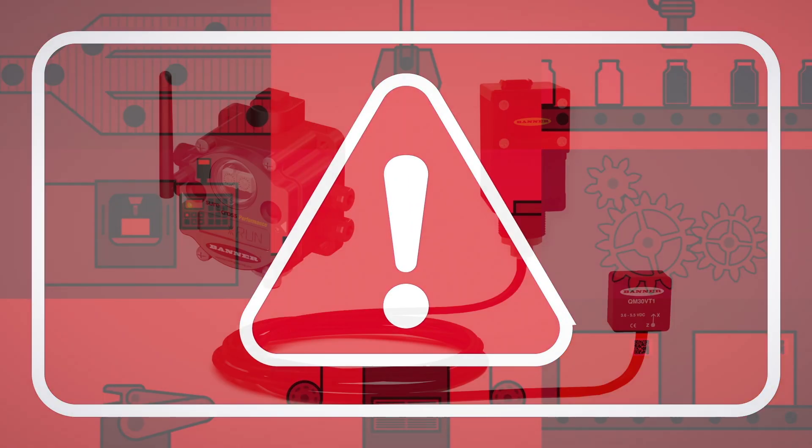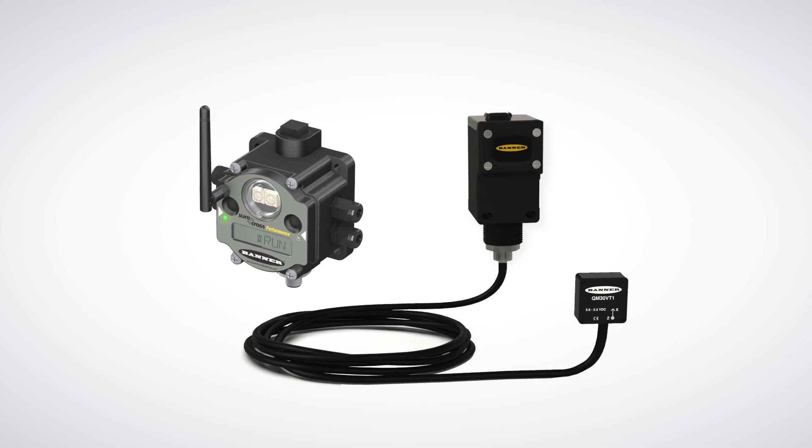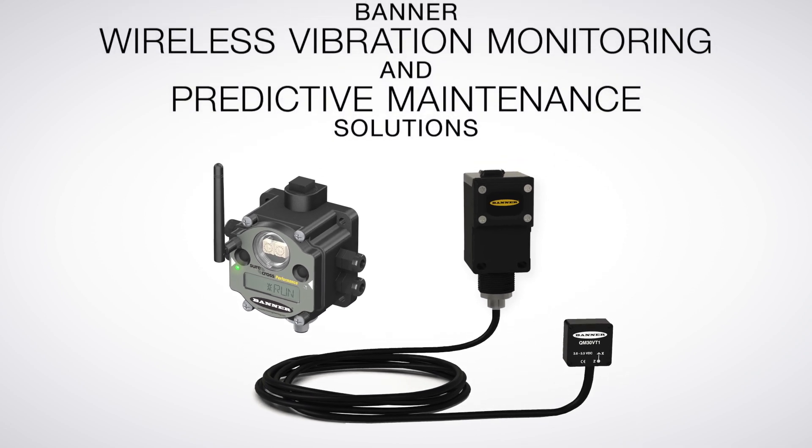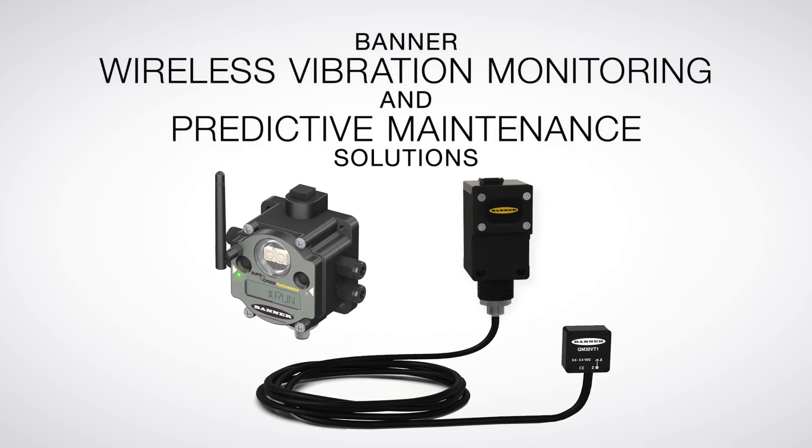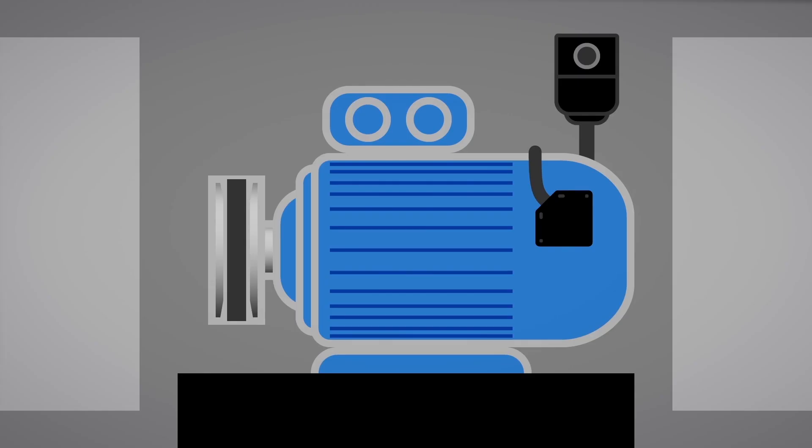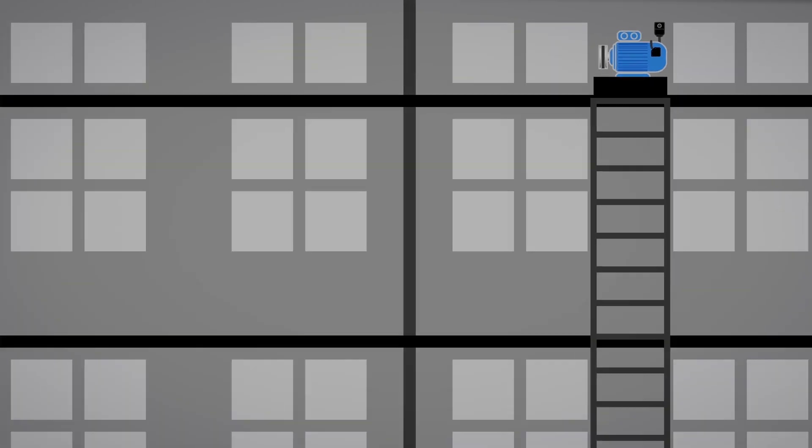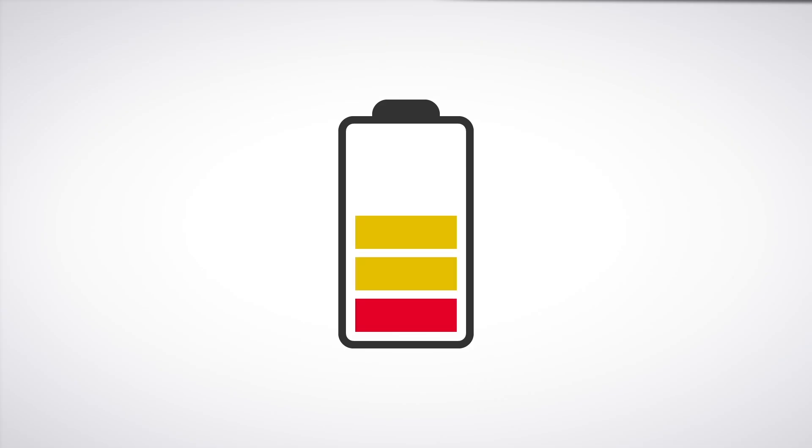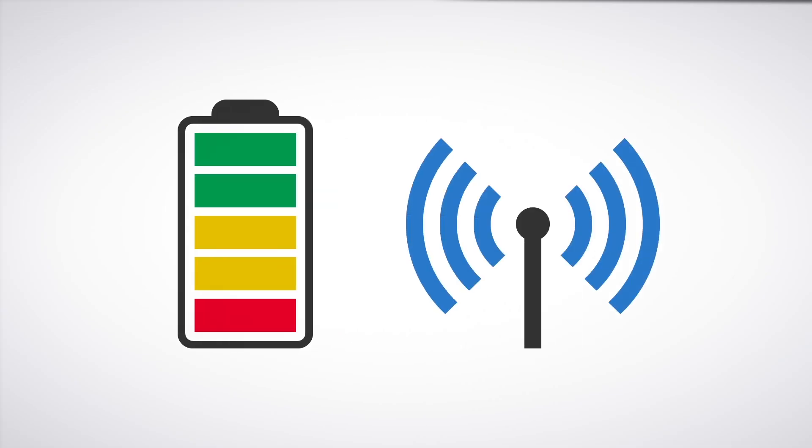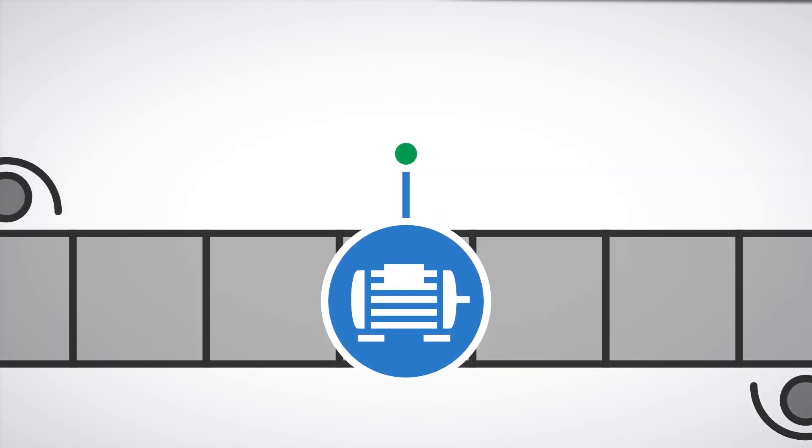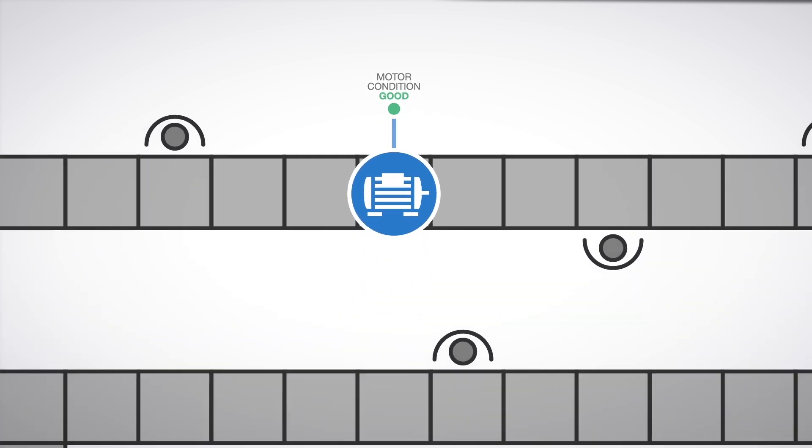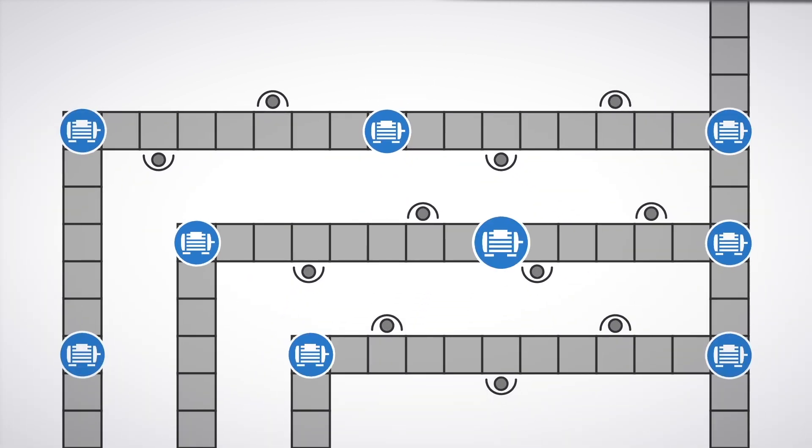Stay a step ahead of your machines by continuously monitoring them with Banner's Wireless Vibration Monitoring and Predictive Maintenance Solutions. Because they are wireless, it doesn't matter how difficult it is to get to your machines. With battery powered nodes and wireless connectivity, you will know the condition of your machines and be able to address potential issues, no matter where they are located.